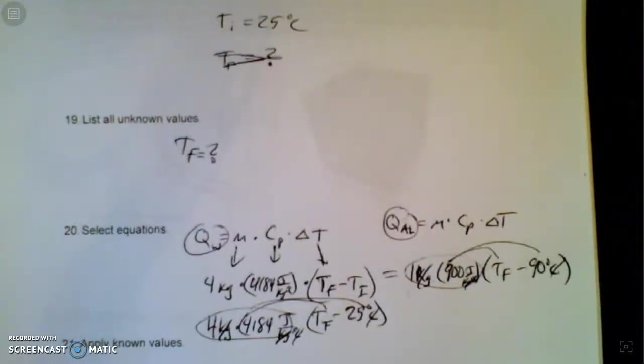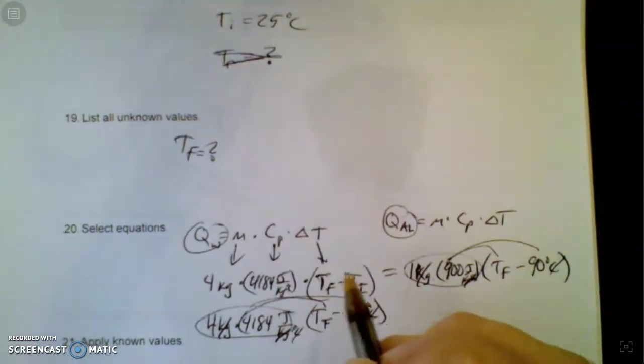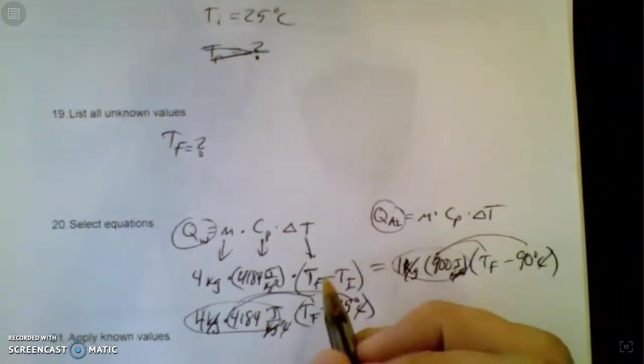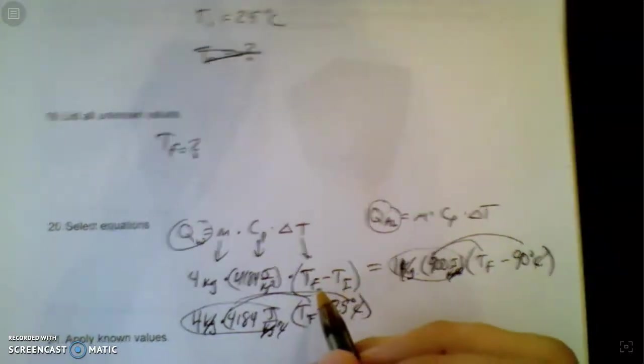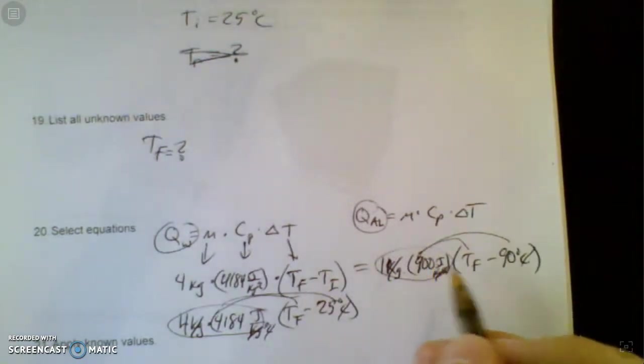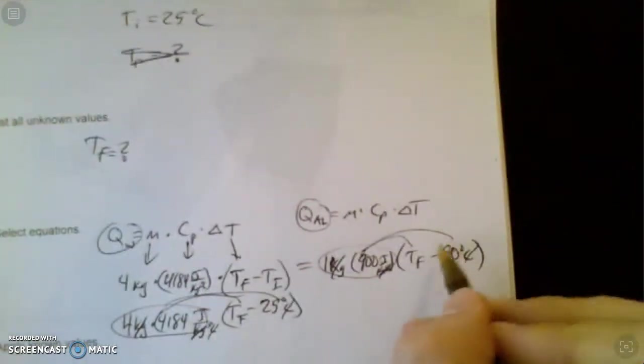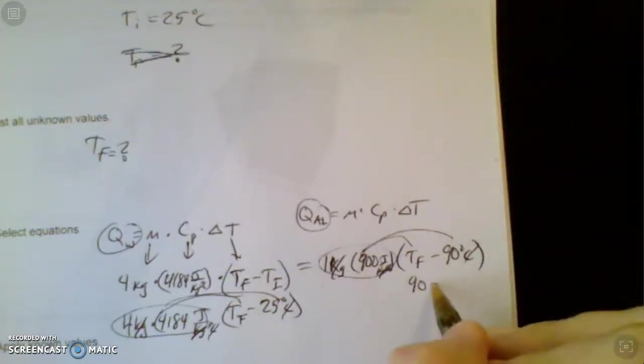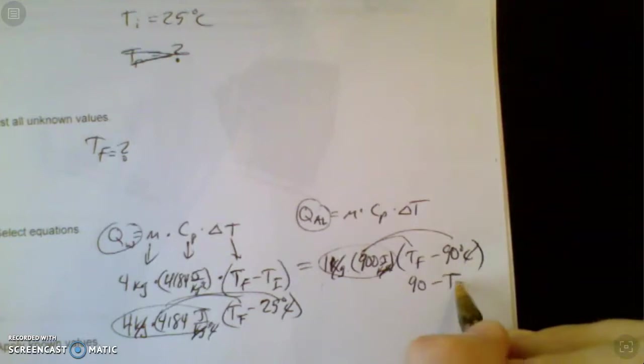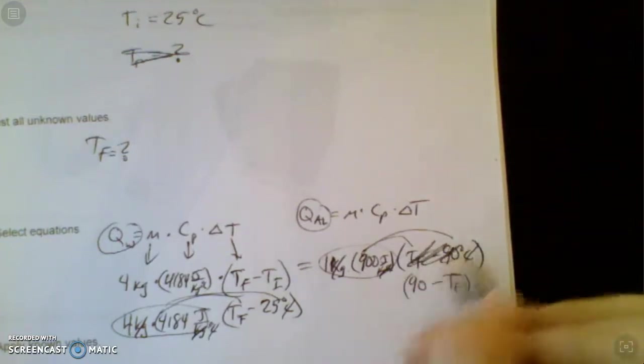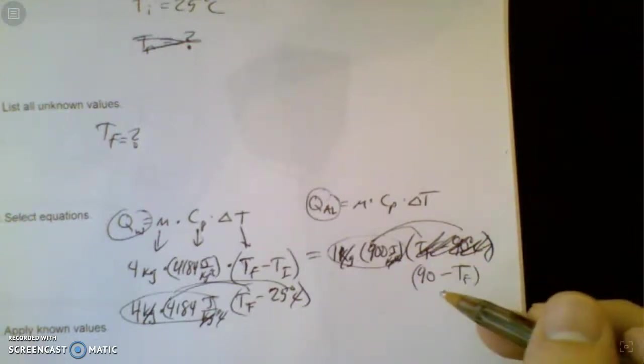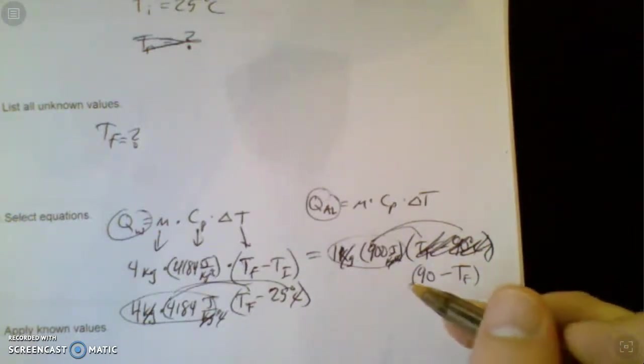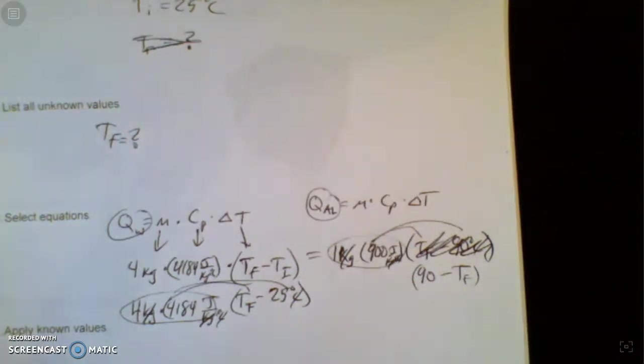Oh, almost missed it. The water goes from cold to warm, so you'd actually want final minus initial to keep it a positive number. The aluminum starts out hot and ends up cold. So actually you would switcheroo this and say 90 minus Tf, because you kind of want it to be a positive number on both sides. It starts out warmer and ends up colder. You've got a bigger number minus a smaller number. So just make sure you fix that.